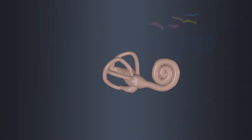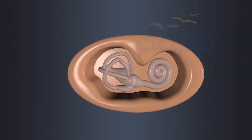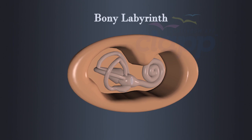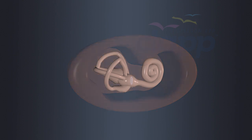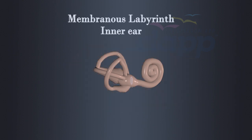The inner ear is situated inside a bony case in the skull called bony labyrinth. The bony labyrinth provides protection and support for the delicate structures of the inner ear. There is a membranous structure inside bony labyrinth called membranous labyrinth or inner ear.